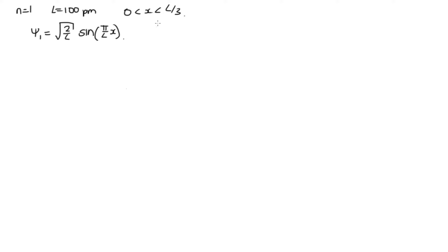And we want to know the probability. So the probability is equal to, we're going between 0 and L over 3, and then it's psi star psi, which is just psi squared because this is real. So we square this: 2 over L sine squared pi over L times x dx.